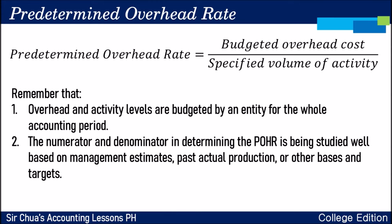Remember that overhead and activity levels are budgeted by an entity for the whole accounting period — the company plans their level of production and the overhead they will incur. The numerator and denominator in determining the predetermined overhead rate are studied carefully based on management estimates, past actual production, or other bases and targets. Poor planning leads to wrong costing and wrong prices — it's a domino effect: garbage in, garbage out.